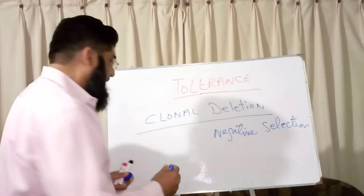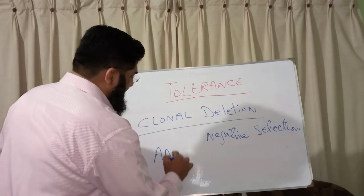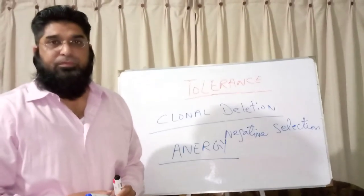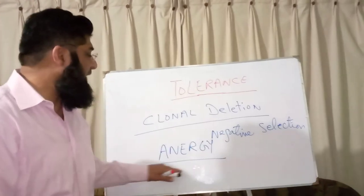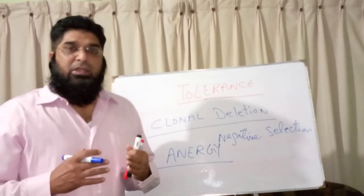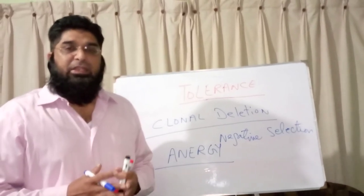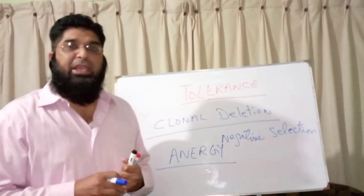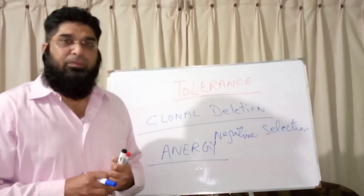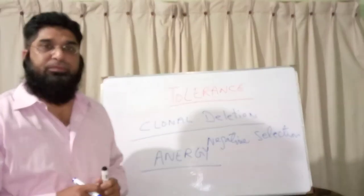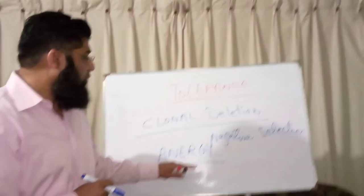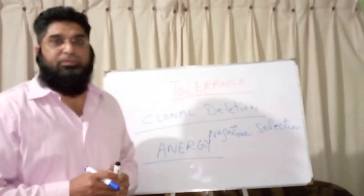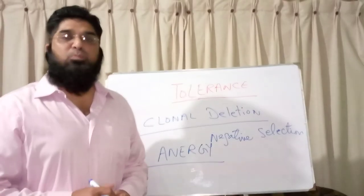The second mechanism is clonal anergy. Clonal anergy means T lymphocytes are either killed or made inactivated in order to produce tolerance. Clonal anergy is more prevalent in peripheral tolerance, whereas clonal deletion is more prevalent in central tolerance.